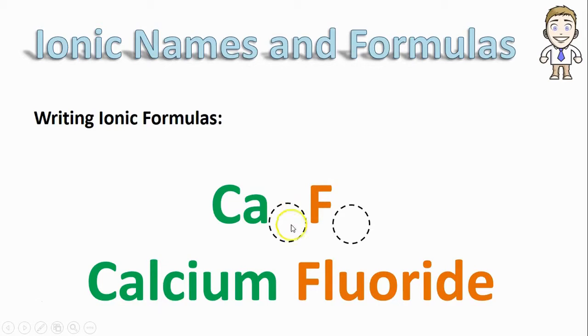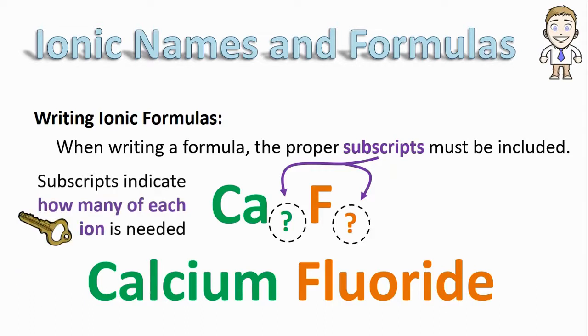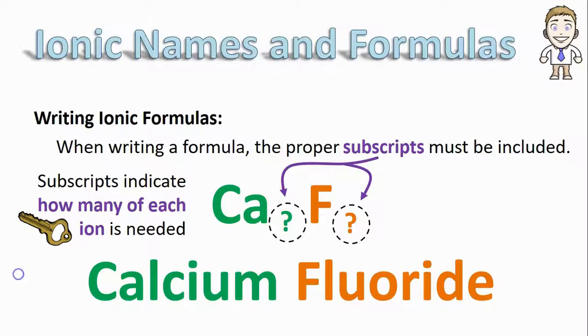The hard part is filling out those little numbers you keep seeing after each symbol. Should it be CaF2, Ca2F? Maybe a three and a two. The point is how are you supposed to know? Those little numbers are called subscripts and they have to be included for a formula to be considered complete. Their job is simple though. They're there to indicate how many of each ion is needed.